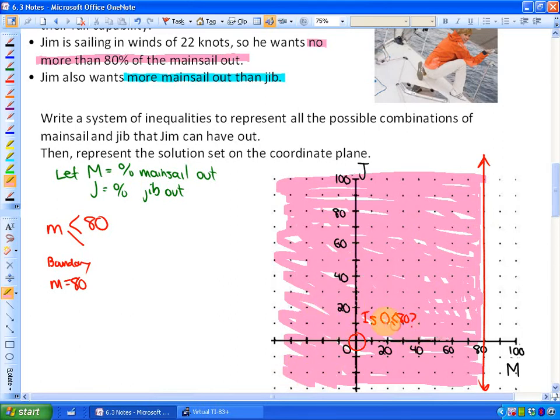So there is the first constraint. The second one here is the blue one. It says Jim also wants more mainsail out than jib. So he would like his mainsail to be more than his jib. Are they allowed to be equal? If it says more mainsail than jib, the answer would be no. So there is no or equal to sign. So mainsail is greater than jib.